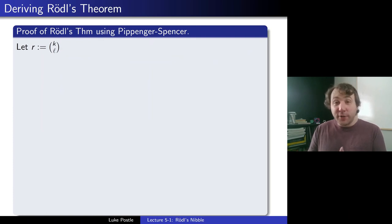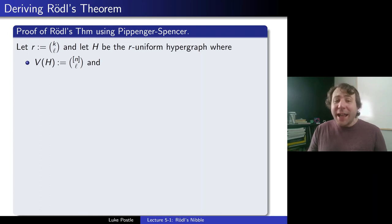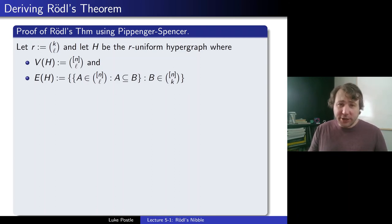Given all that, we can now derive Rödel's theorem from Pippenger-Spencer. So here's the proof of this. Let r be k choose ℓ. So r is that uniformity, we're going to let r be k choose ℓ. And then what? Well we need a hypergraph to apply Pippenger-Spencer to, so we're going to let H be the r-uniform hypergraph where the vertices will be the ℓ-element sets of [n]. Remember those are the ones we want to get covered in this covering number in the block designs. And we're going to let the edges of H be for every k-element subset of [n]. We're going to take all of the ℓ-element subsets in that k-element set. And so then basically we're saying each k-element set becomes a hyperedge. So all the ℓ-element sets are the vertices. These k-element sets are the hyperedges of our hypergraph. So we transform a problem about designs into a problem about hypergraphs.